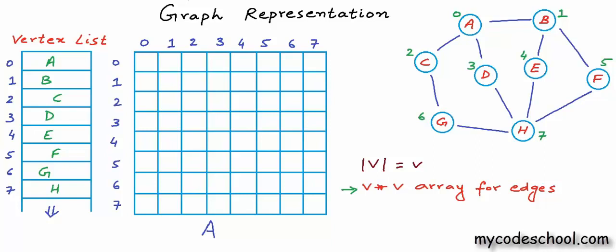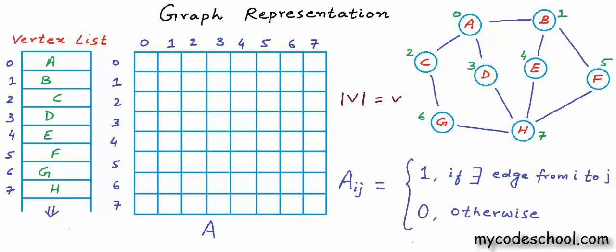If the graph is unweighted and each vertex has an index between 0 and V-1, then in this matrix we can set A[i][j] as 1 or boolean true if there is an edge from i to j, and 0 or false otherwise. For this example graph, vertex 0 is connected to vertices 1, 2, and 3. Vertex 1 is connected to 0, 4, and 5. Because this is an undirected graph, if we have an edge from 0 to 1, we also have an edge from 1 to 0, so A[1][0] should also be set to 1.